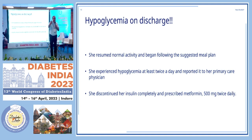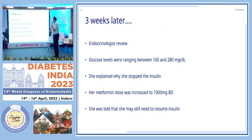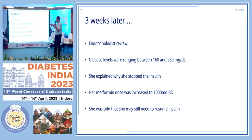How do you discharge a patient? Based on the pre-admission HbA1C level. She discontinued insulin, went back to metformin 500 twice a day. Three weeks later, reviewed by the endocrinologist — blood sugars between 160 and 280. She explained why she stopped insulin; metformin was increased to 1000 BD, and she was told she may still need to resume insulin.